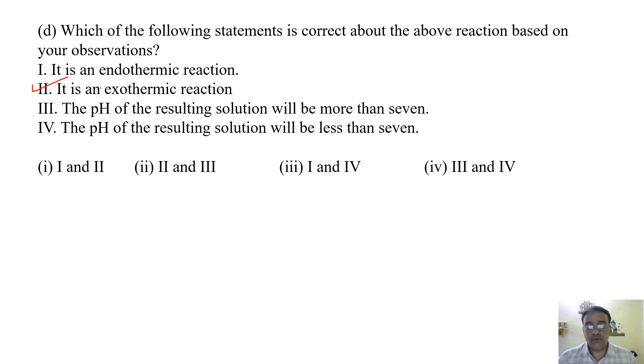And now the product what we are getting here, that is basic in nature. The pH that is less than 7, that is acidic in nature, means acids. And bases, that is more than 7. So the third is correct.